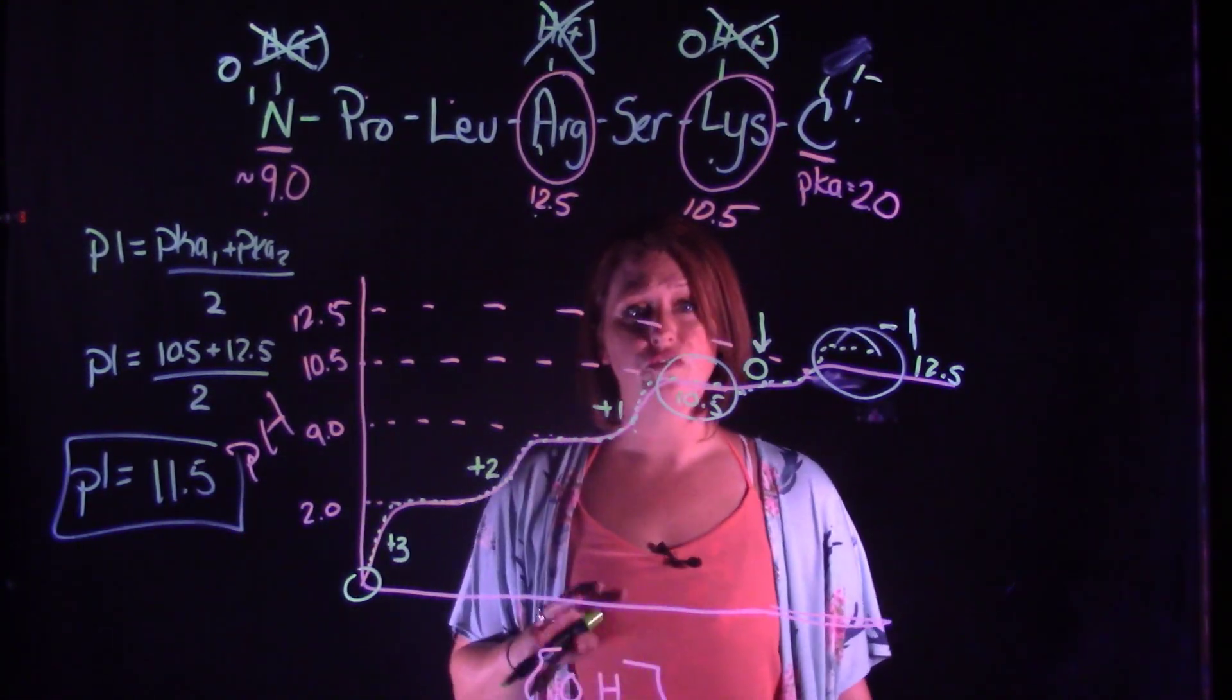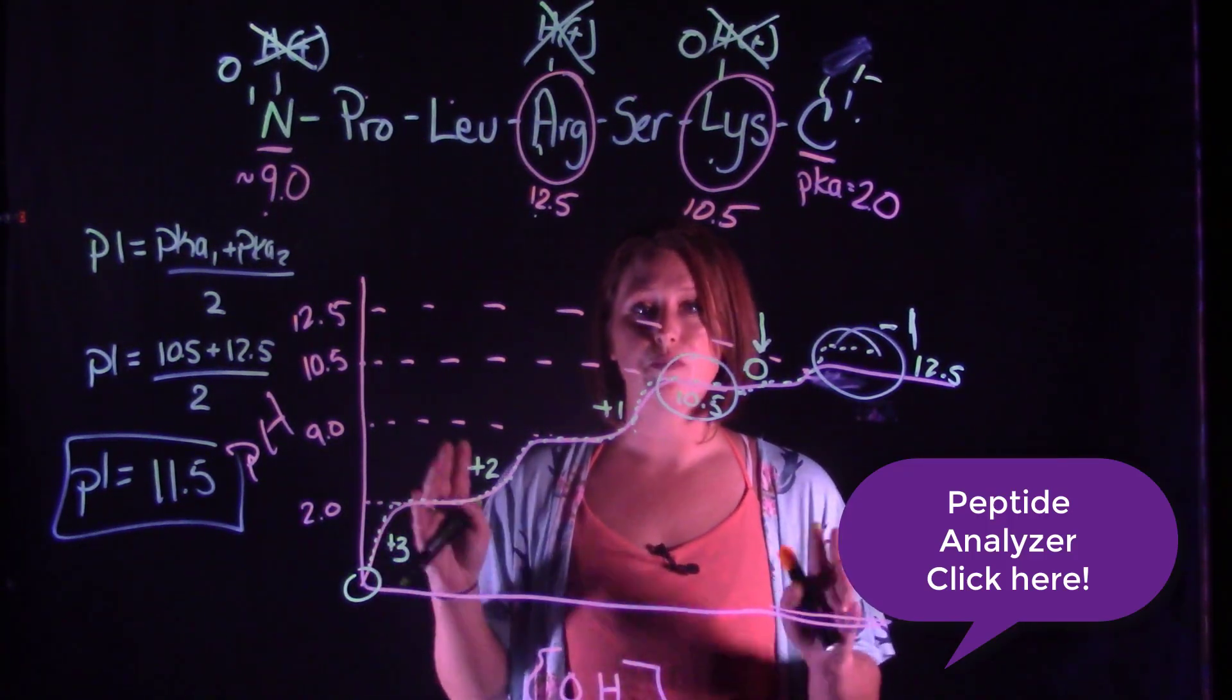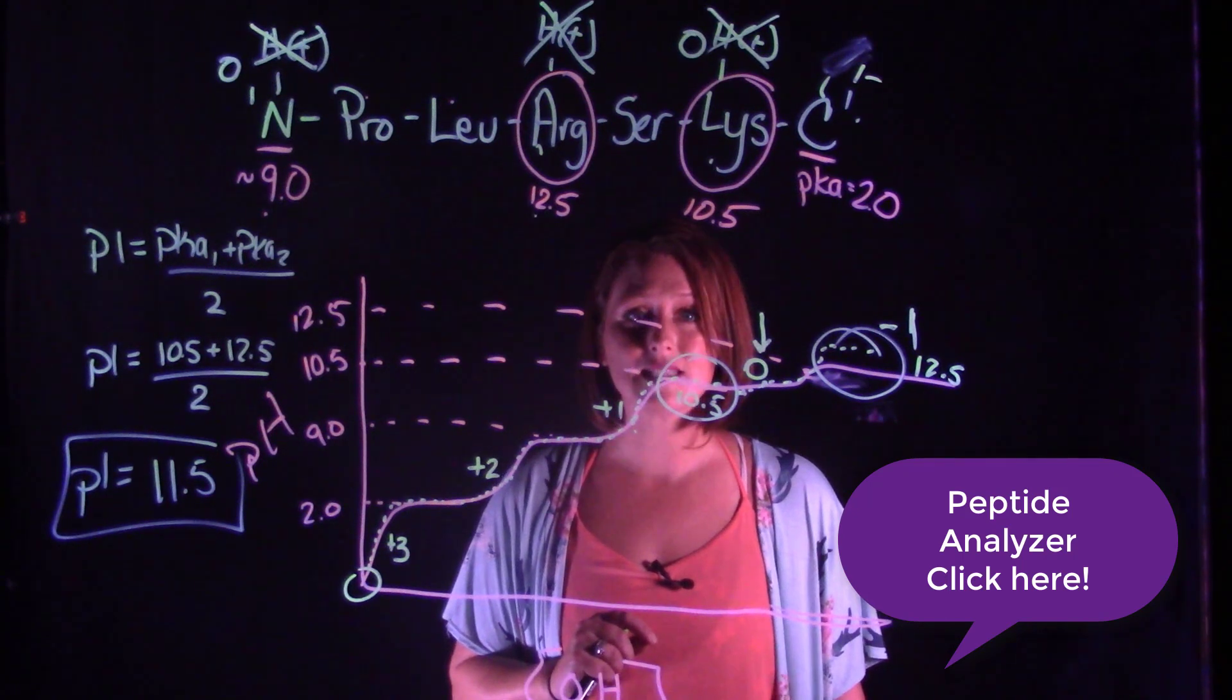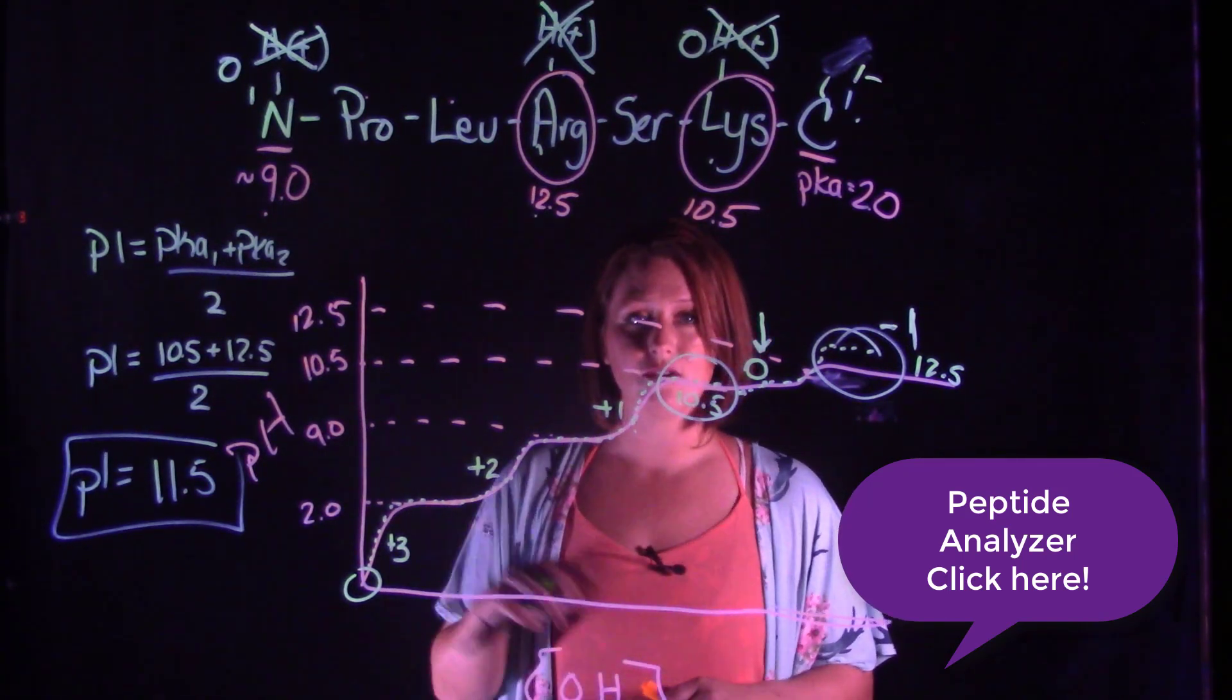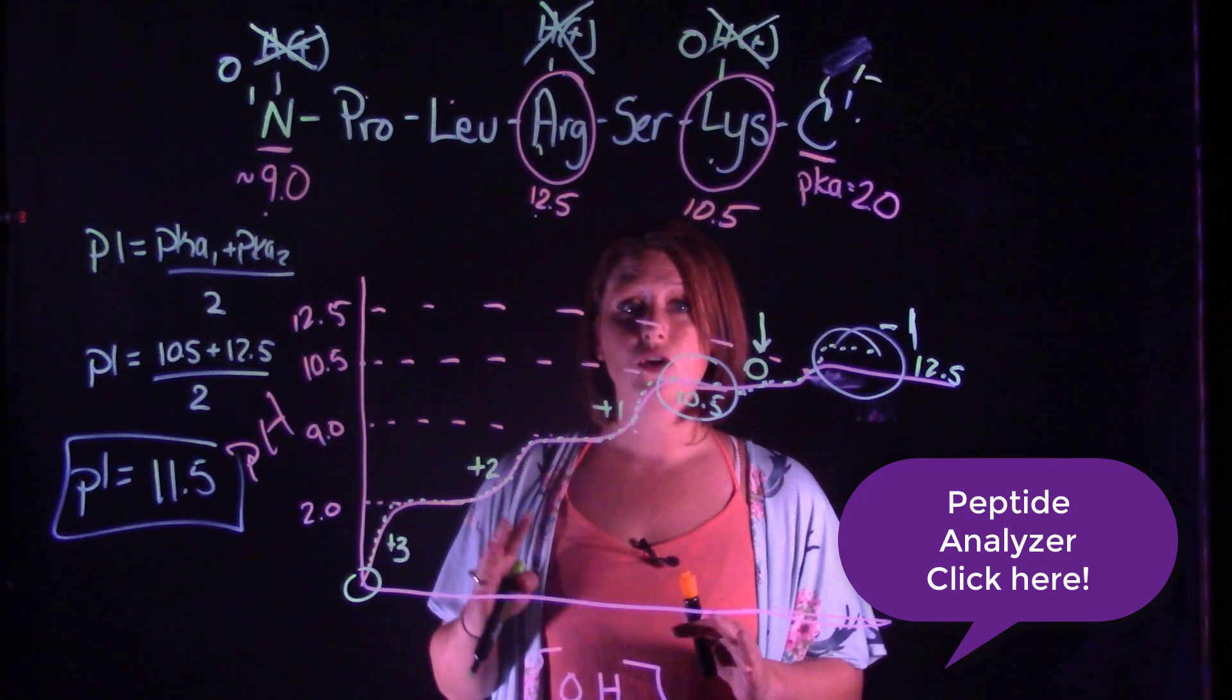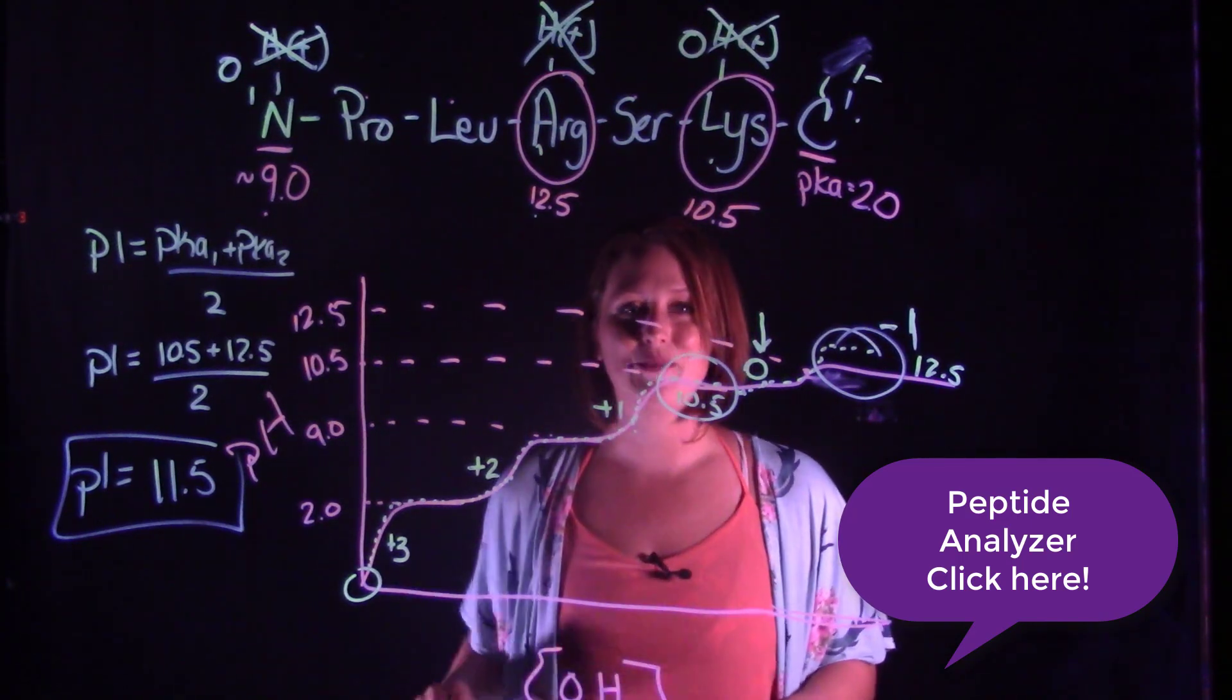You can even check your answer using Thermo Fisher's polypeptide analyzer. Follow the link here and it will take you to a website where you can put in the amino acid sequence, click analyze, and you can scroll down to see what the pI is. Let's practice some other sequences here. Again, you can check your answer using that Thermo Fisher polypeptide analyzer. You can also make your own sequences for additional practice and check your answer through that as well. All right, I'll see you guys next time in class.